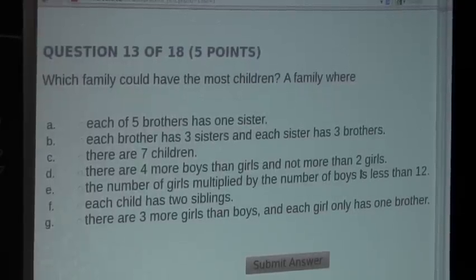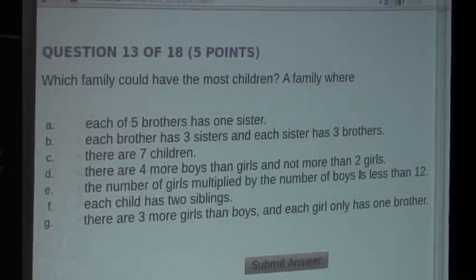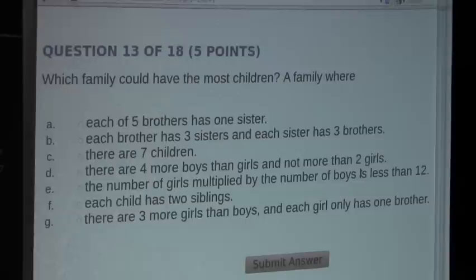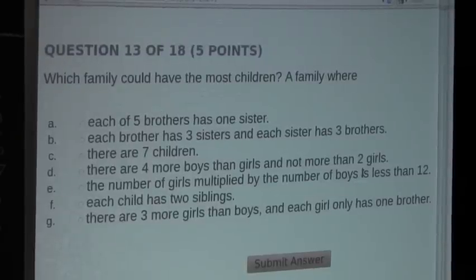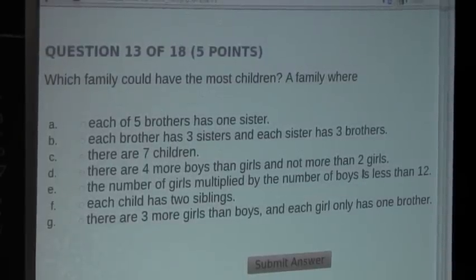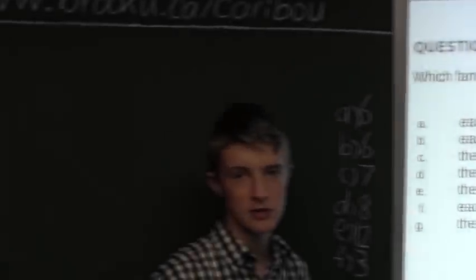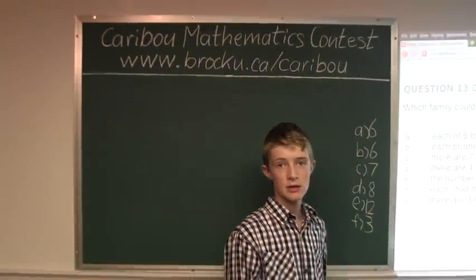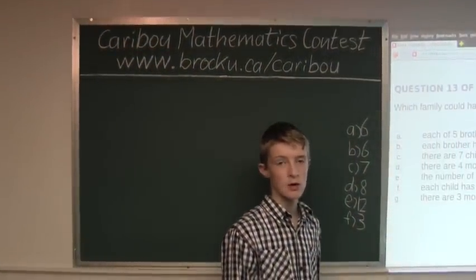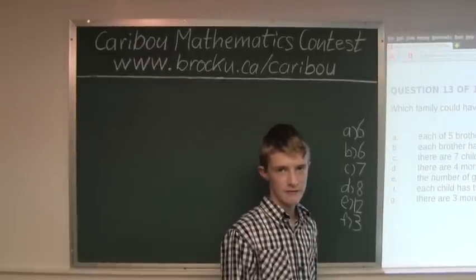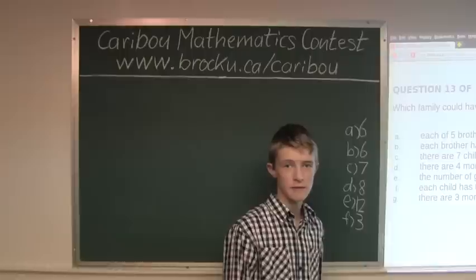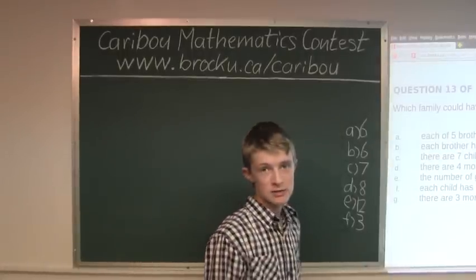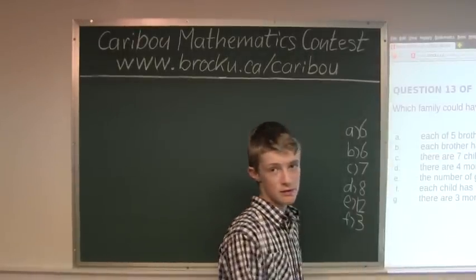And now the last one, G. There are three more girls than boys, and each girl only has one brother. So if there is only one brother, which means there is one boy, and there are three more girls than boys, which means there has to be four girls and one boy, which means four plus one is five. So there are five children in this family, which means G is five.